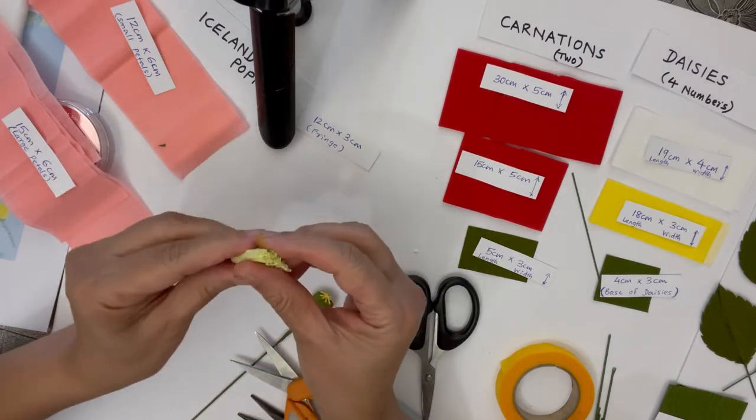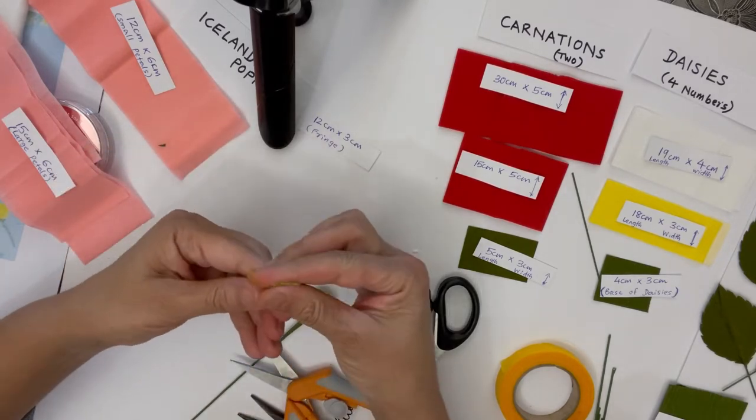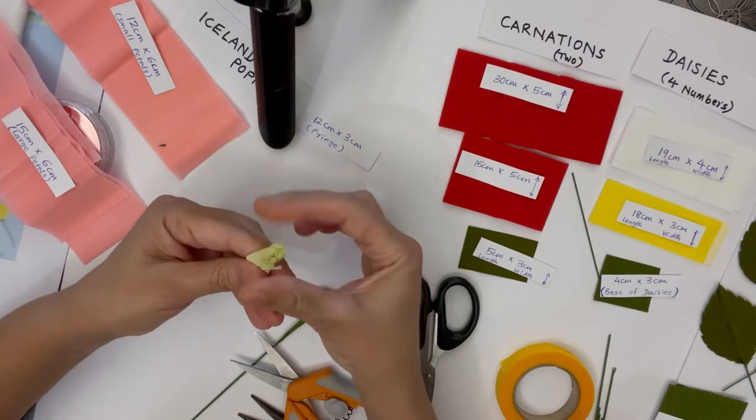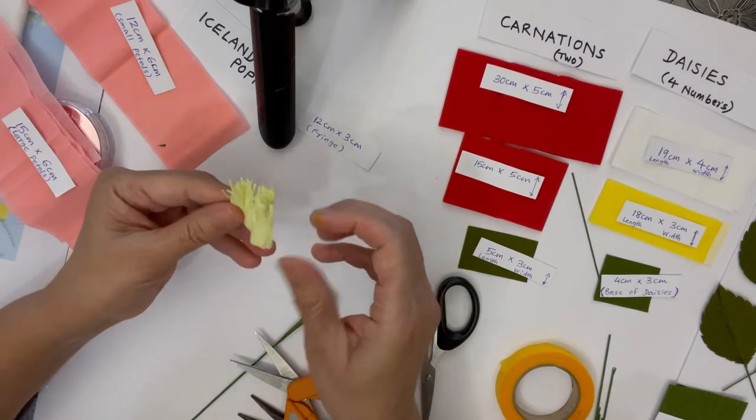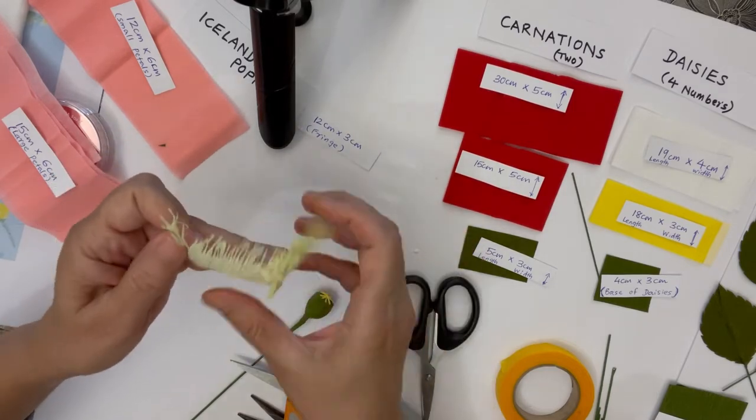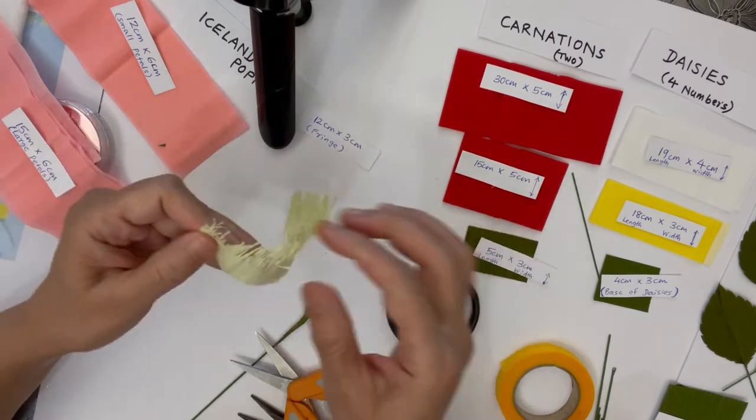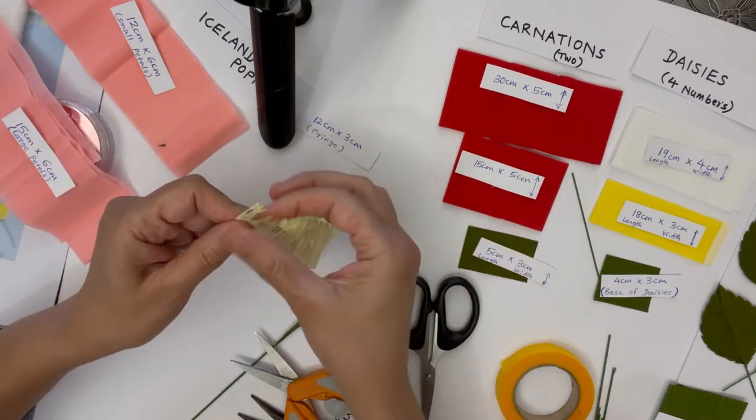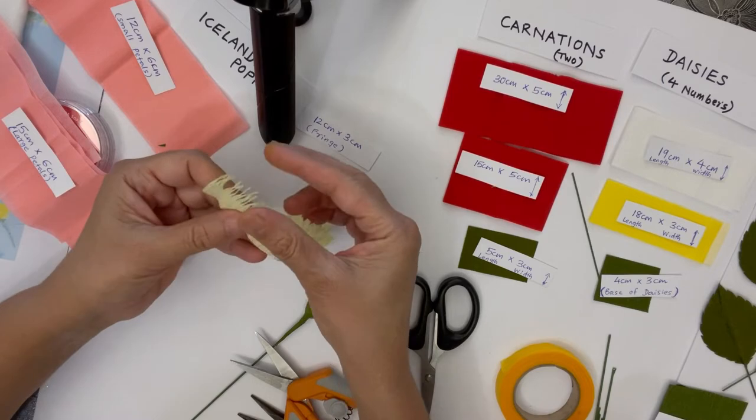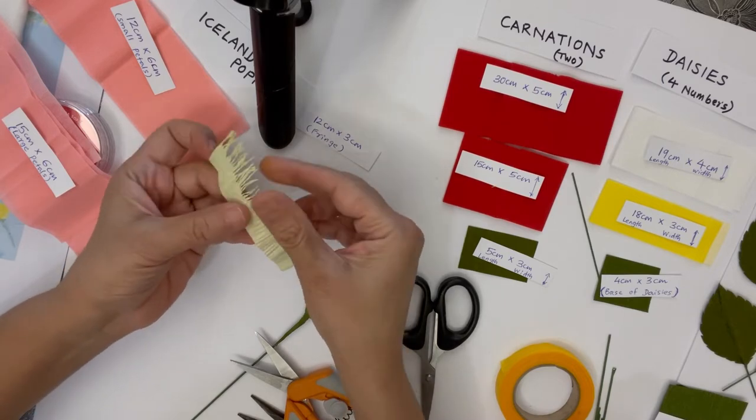Once this is done, squish it a little bit. Open it, and then each one of the fringes you can just twist it a bit.